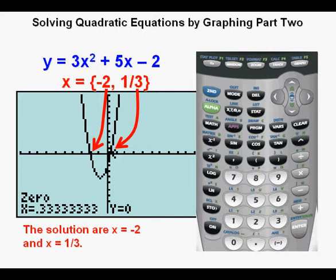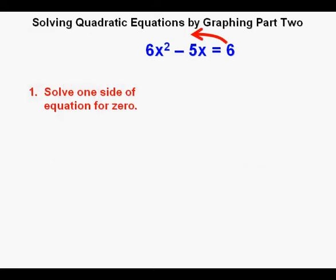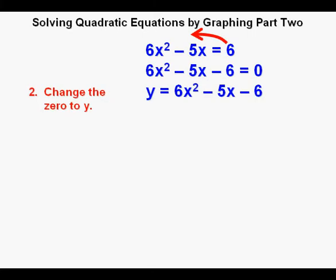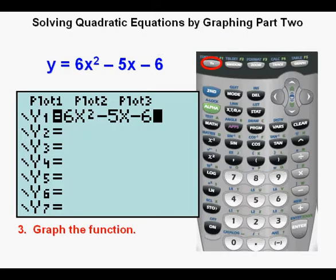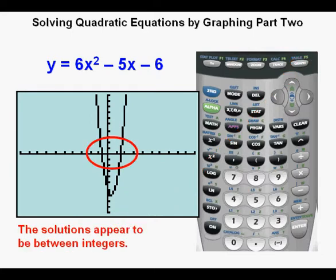We will now work on the equation 6x squared minus 5x equals 6. Step 1: get the right side equal to zero by moving the 6 to the left side. Step 2: we have y equals 6x squared minus 5x minus 6. Step 3: graph the function. We place the equation in the function editor by pressing y equals and entering the function. We press graph or zoom 6. The solutions appear to be between integers, with one between negative 1 and 0 and the other between 1 and 2.